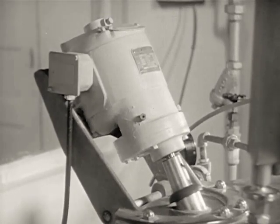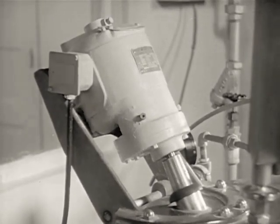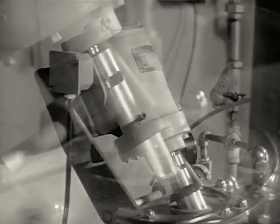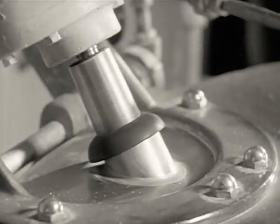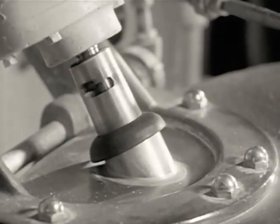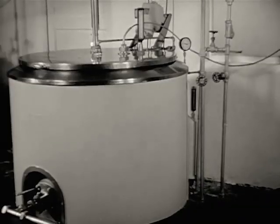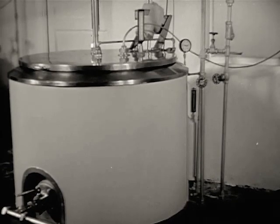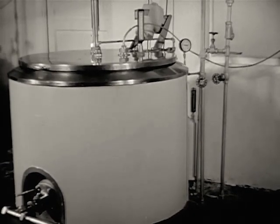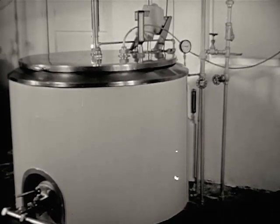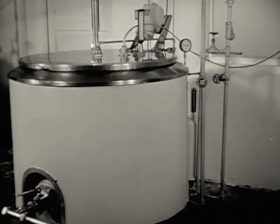The agitator motor and shaft, as well as all other instruments and pipes, are connected to the vat cover in such a way that no dirt can get through the openings. Good equipment, well cared for, helps you protect the milk from contamination. Let's see how this pasteurization vat operates.